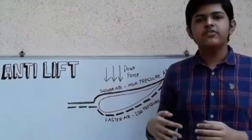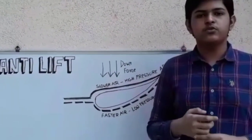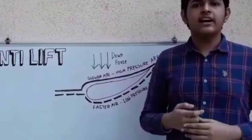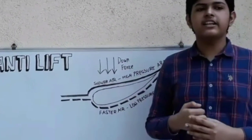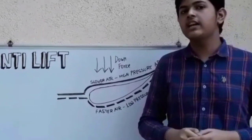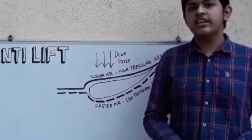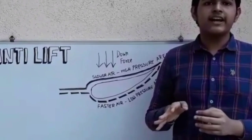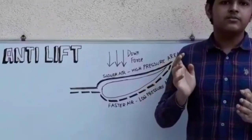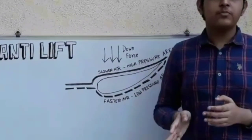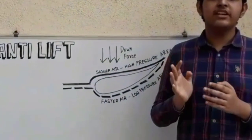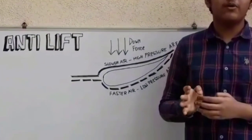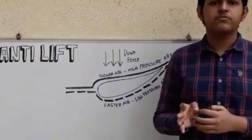Another key factor in generating downforce are diffusers. Diffusers make the air flowing under the car move at a greater speed, creating a low pressure area below the car and turning the car into a wing on its own. As the air flow above the car moves at a slower speed than below, this helps create even greater amounts of downforce and even more grip.